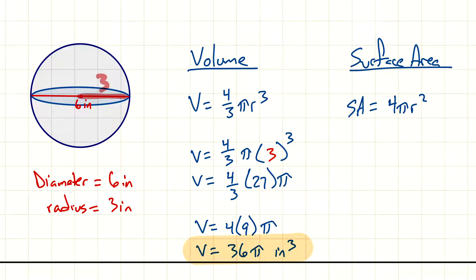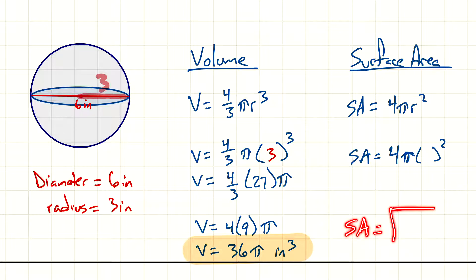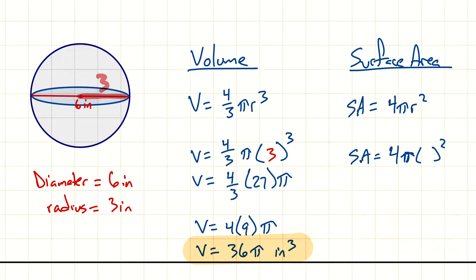For surface area, we're looking at the formula four pi r squared. Now that we've figured out the radius is three, let's see if you can tell me what your final answer is for surface area. Don't forget your units and leave your answer in terms of pi.